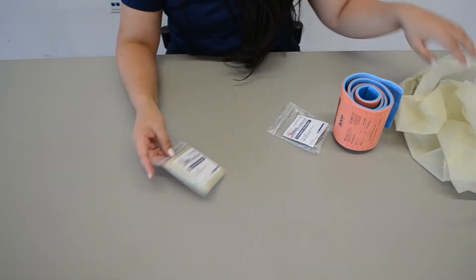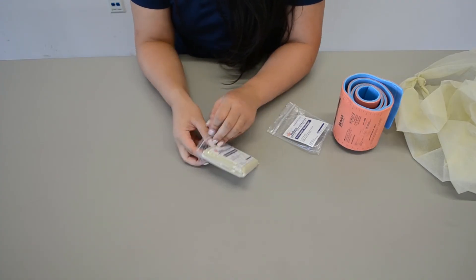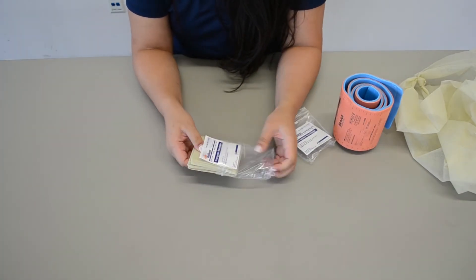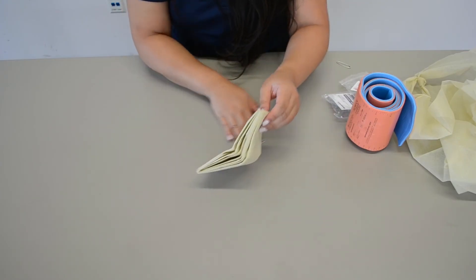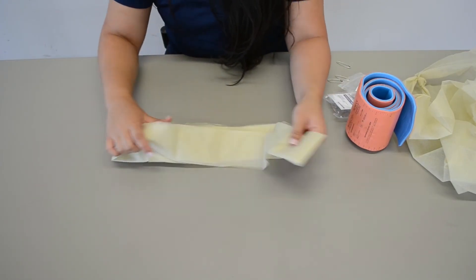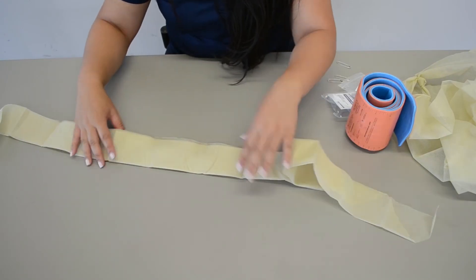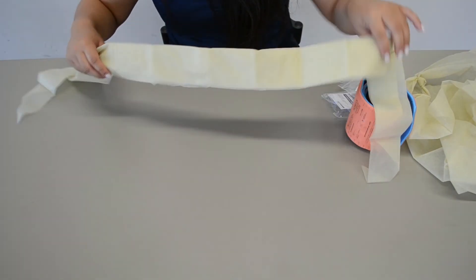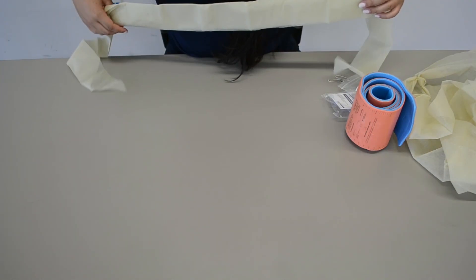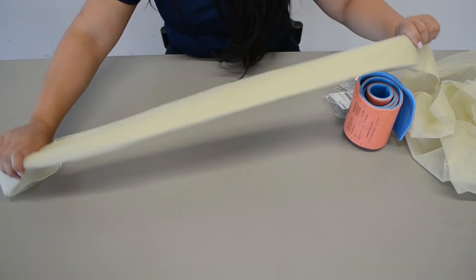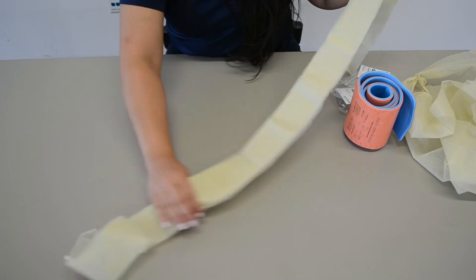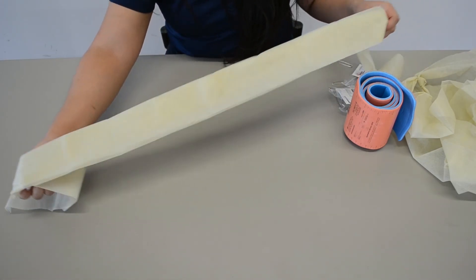And then for your second triangle bandage, this is going to be your swat. So you're going to open this up and take out the safety pins. Usually you can leave it like this depending on the width of the patient, but this is going to go over the patient's arm and around their rib cage, and you're just going to tie it in the back. So just leave it like this and then secure it on the patient's back.